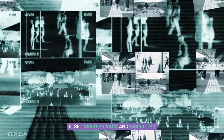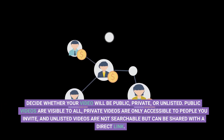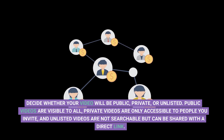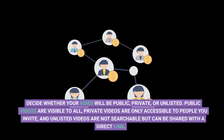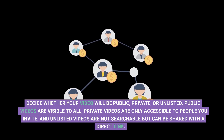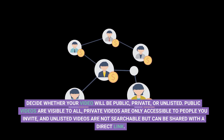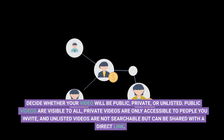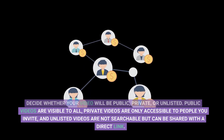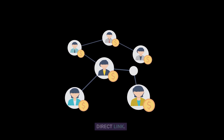Step 5: Set video privacy and visibility. Decide whether your video will be public, private, or unlisted. Public videos are visible to all. Private videos are only accessible to people you invite, and unlisted videos are not searchable but can be shared with a direct link.